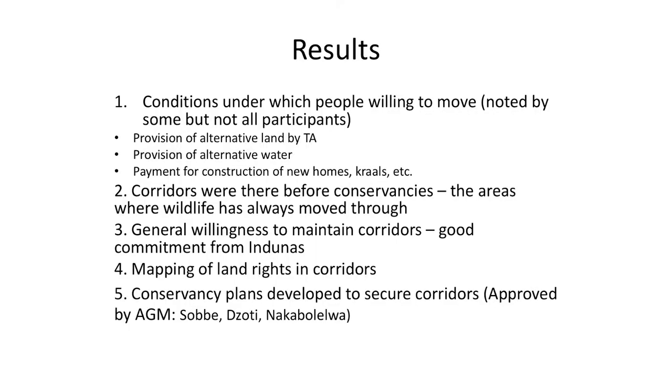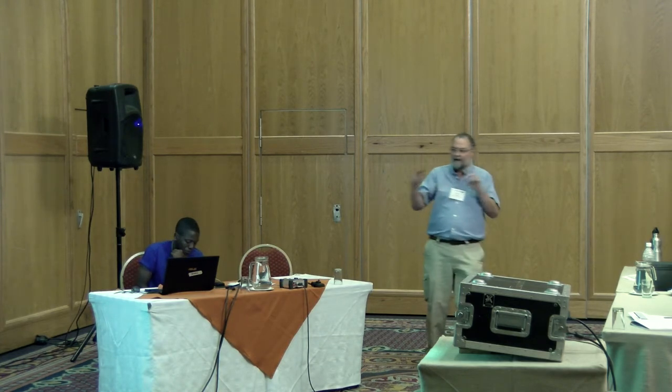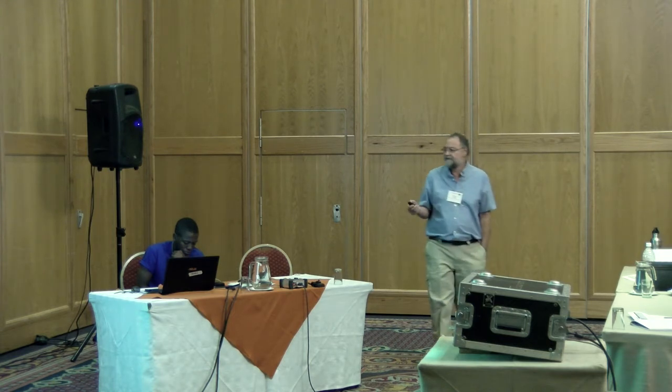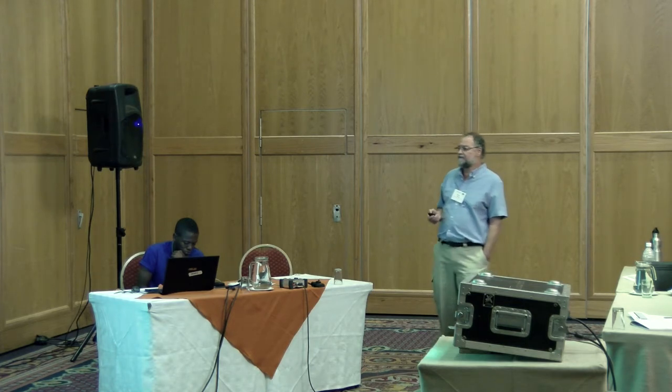We've seen some conditions emerging under which people would be willing to move — if they could get other land, if they had alternative water, if someone paid for the construction of new homes. It was also very clear that the conservancies themselves were not establishing corridors. These are wildlife corridors where wildlife has been moving for many years. The issue is not so much establishing corridors but helping communities to maintain them. There's been a general willingness to maintain the corridors and good commitment, particularly from the traditional leaders.